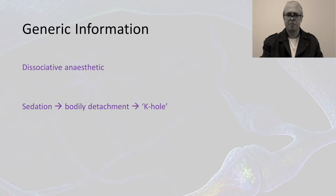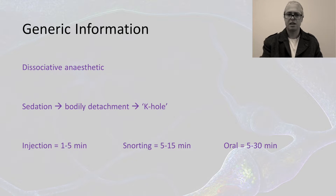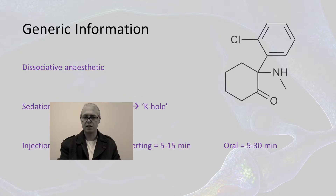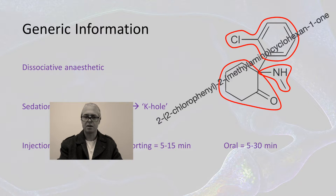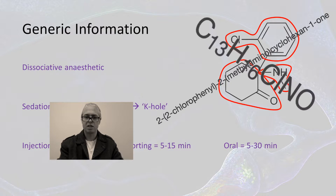However, it can be injected intravenously and intramuscularly in clinical circumstances. Ketamine consists of a chlorobenzene, secondary amine and a cyclohexanone which translates to this or that structure.